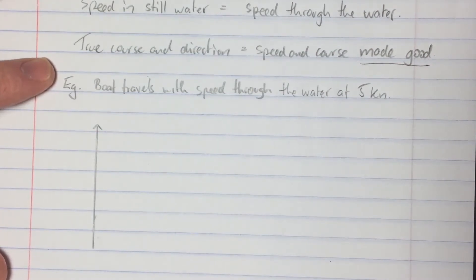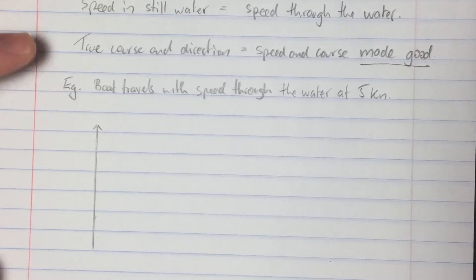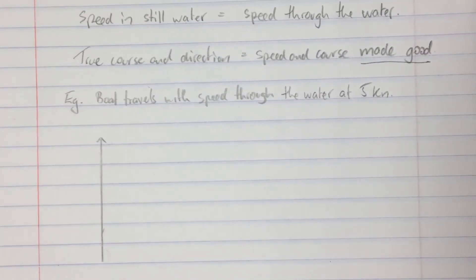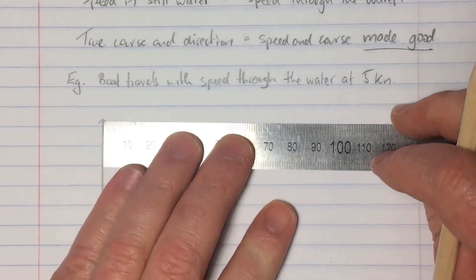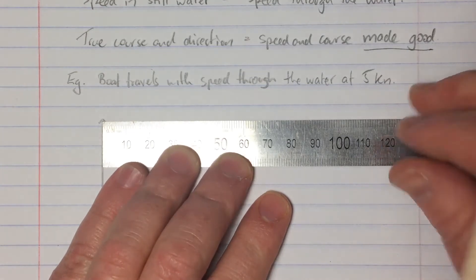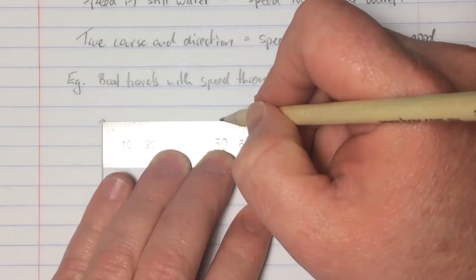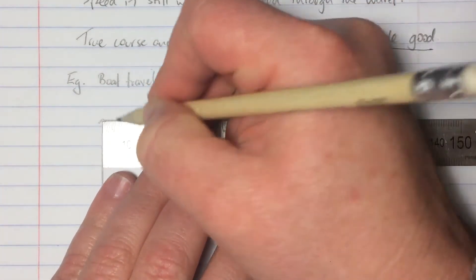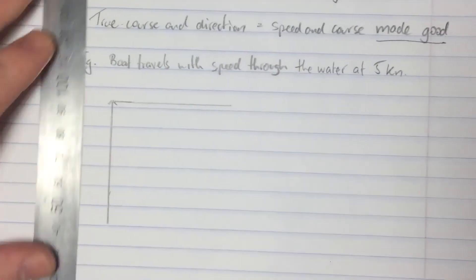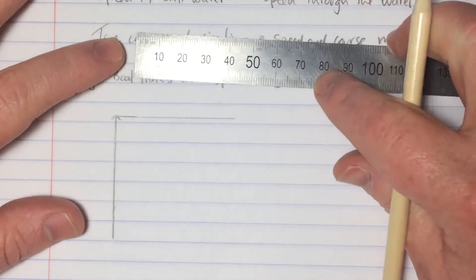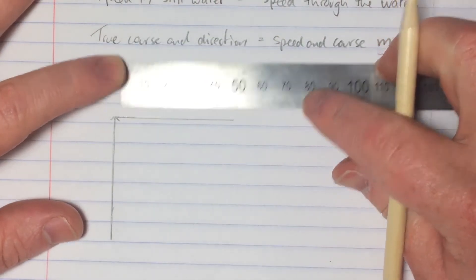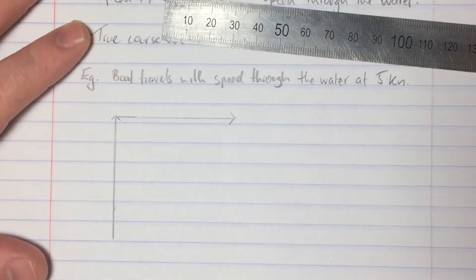Now if for example the water is not still but there's a current flowing in the water, say a current of five knots in an easterly direction, what we can do to represent that is to add another arrow, a length of five centimeters in an easterly direction.